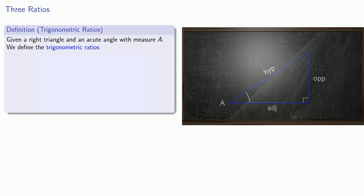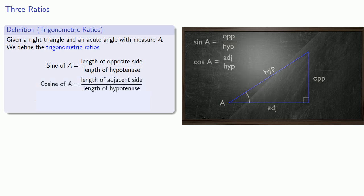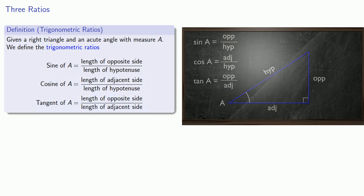Now we can define three important trigonometric ratios. Given a right triangle and an acute angle with measure a, we define the trigonometric ratio sine as the length of the opposite side divided by the hypotenuse; cosine as the length of the adjacent side divided by the hypotenuse; and tangent as the length of the opposite side divided by the adjacent side. Given any right triangle and the length of all three sides, we can find the sine, cosine, and tangent of either of the acute angles in the triangle.